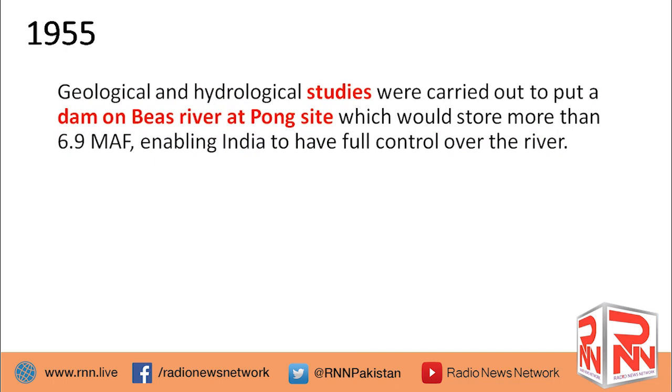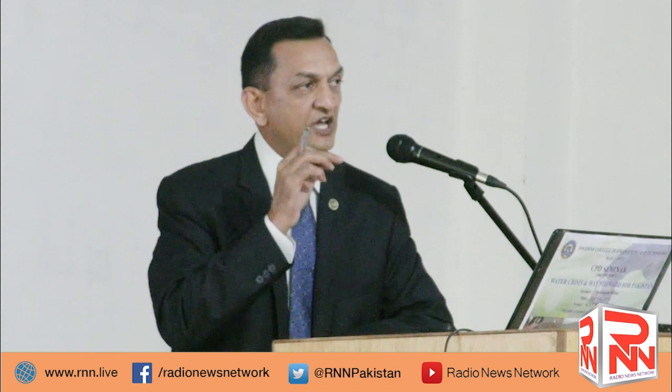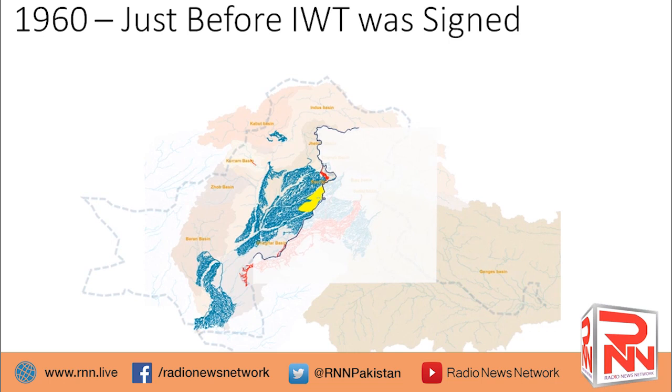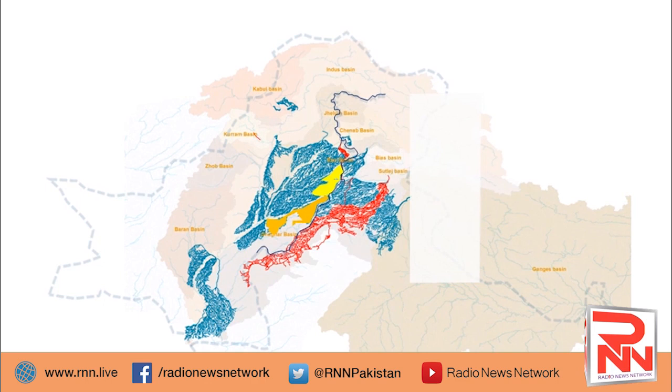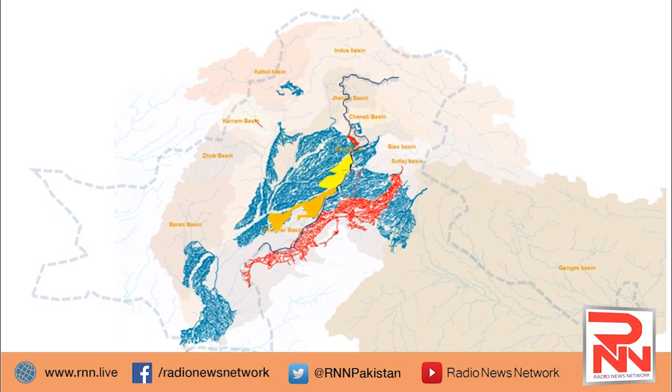In 1955, India started work on Pong Dam on the Beas River, which would completely shut the Beas River and stop it from flowing into Satlaj and then into Pakistan. By 1960, just before the treaty was signed, India had already gained full capacity to divert the waters it intended to take, and had built all the major works necessary for that purpose.